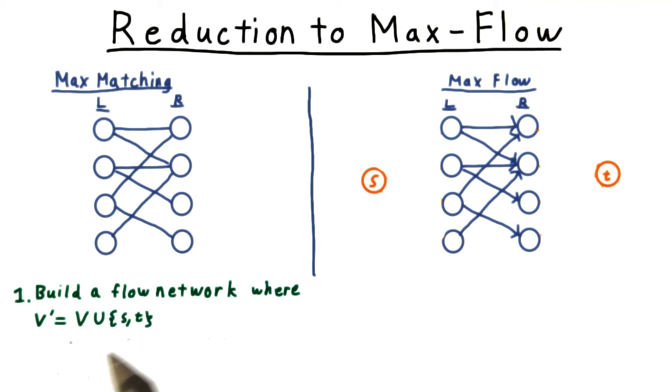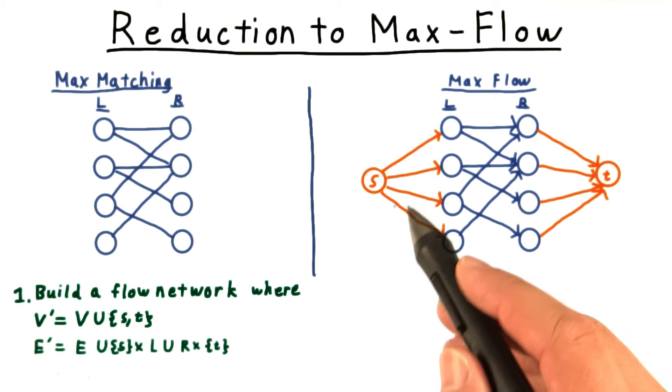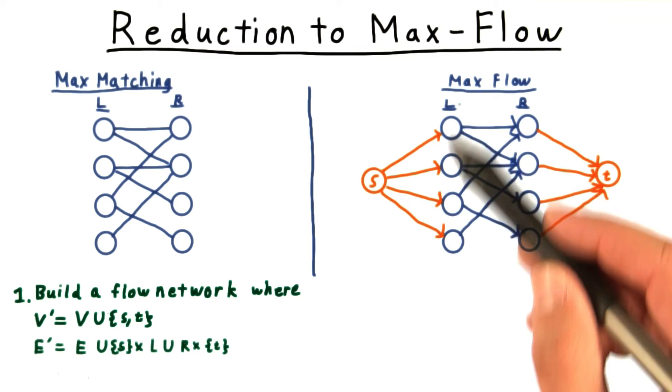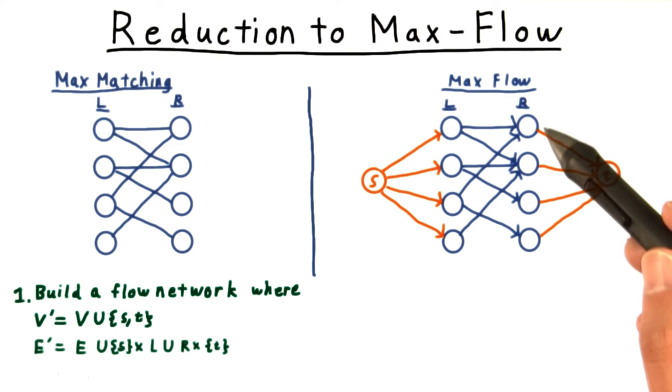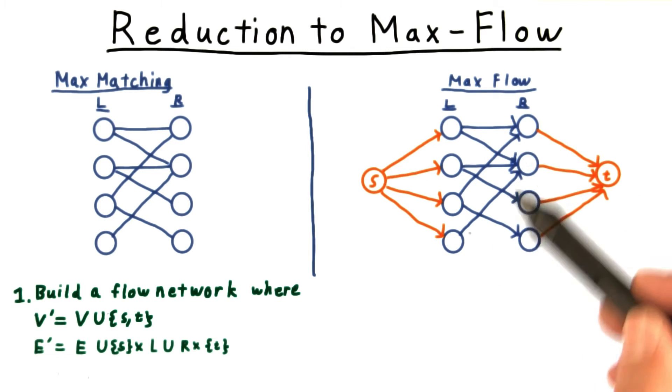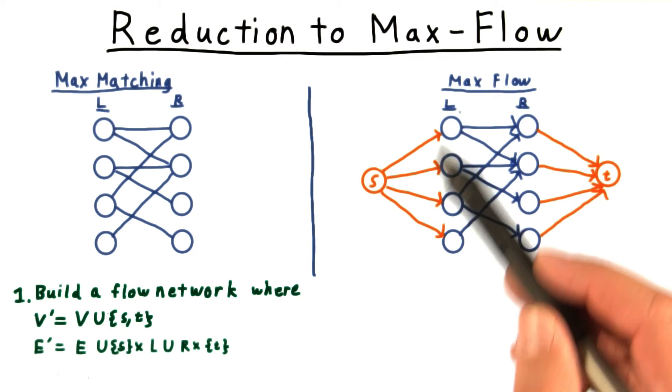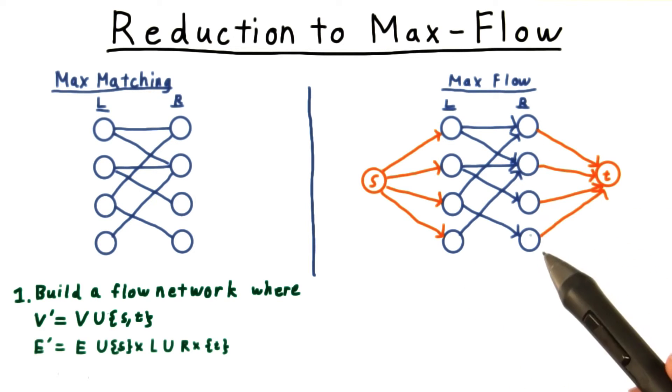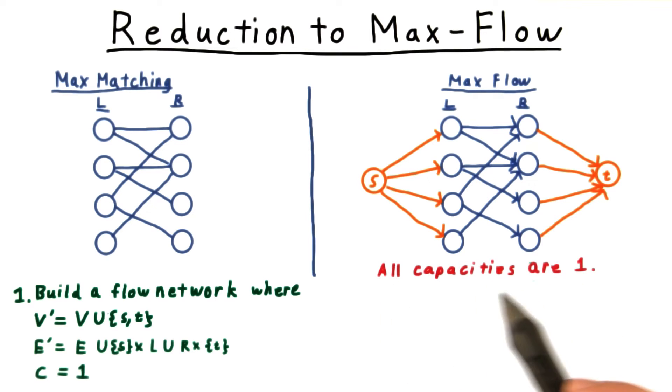We build a flow network that has the same set of vertices, plus two more which serve as the source and the sink. We then add edges from the source to one half of the partition, and from the other half of the partition to the sink. Internal edges are given a direction from the source side to the sink side. All capacities are set to one.